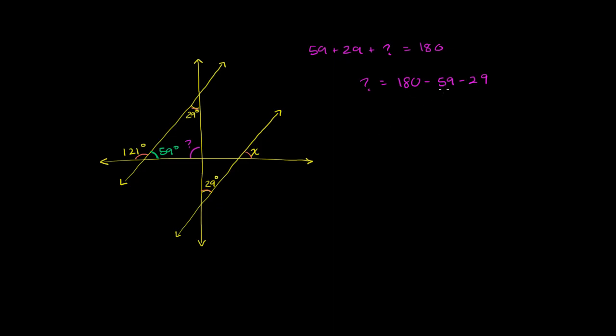So that is going to be 180 minus 59 minus 29. Let's see. 180 minus 59 we already know is 121. And then 121 minus 29. If you subtract just 20, you get 101. You subtract another 9, you get 92. So that's going to be equal to 92 degrees. This is equal to 92 degrees.